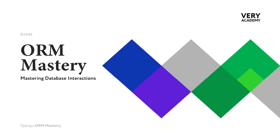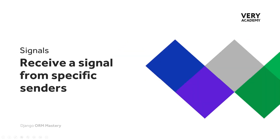In the previous tutorial we learned how to create a receiver function and listen for a specific signal. In this tutorial we take that forward and look at how to receive a signal from a specific sender, as well as how to connect the receiver function utilizing a receiver decorator.